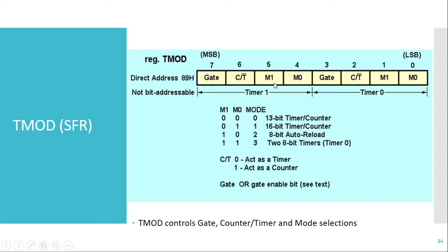The modes are decided with the help of M1 and M0 bits. If both bits are 0, Mode 0 is selected and the timer operates as a 13-bit timer/counter. If the bits are 01, Mode 1 is selected, in which the timer is used as a 16-bit timer/counter mode.